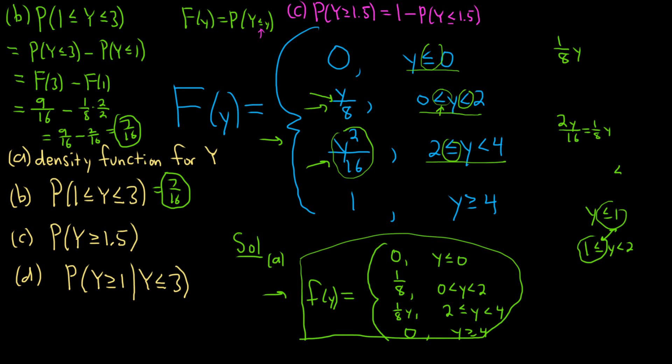They are both exactly the same. So this is equal to one minus, so here this is F of 1.5. And that means we're going to use this piece here, because 1.5 is between zero and two. So it's one minus 1.5 over eight, which you could do by hand, but I have a calculator here. So one minus 1.5 divided by eight, and that's a fraction. That's thirteen sixteenths. So thirteen sixteenths.